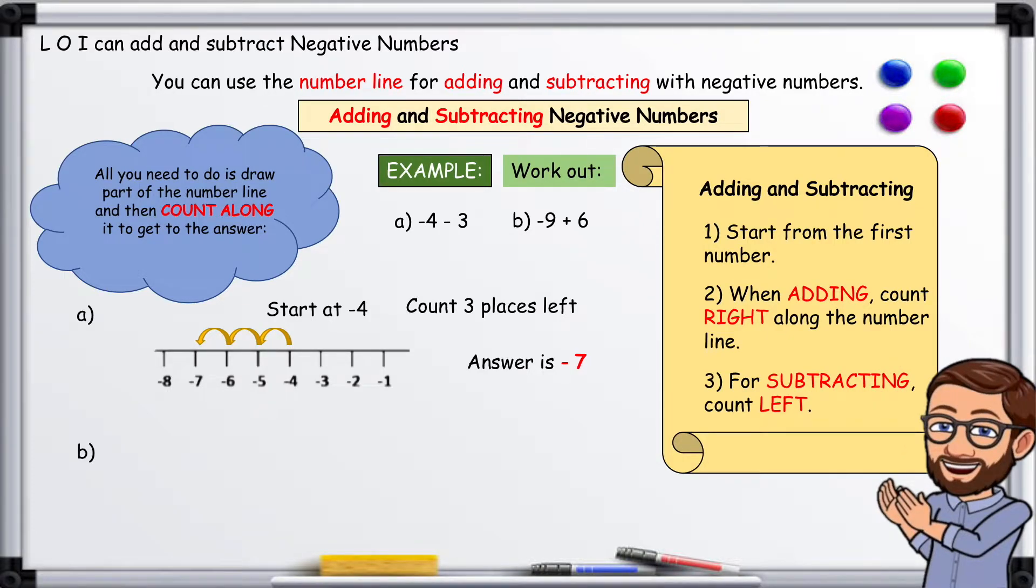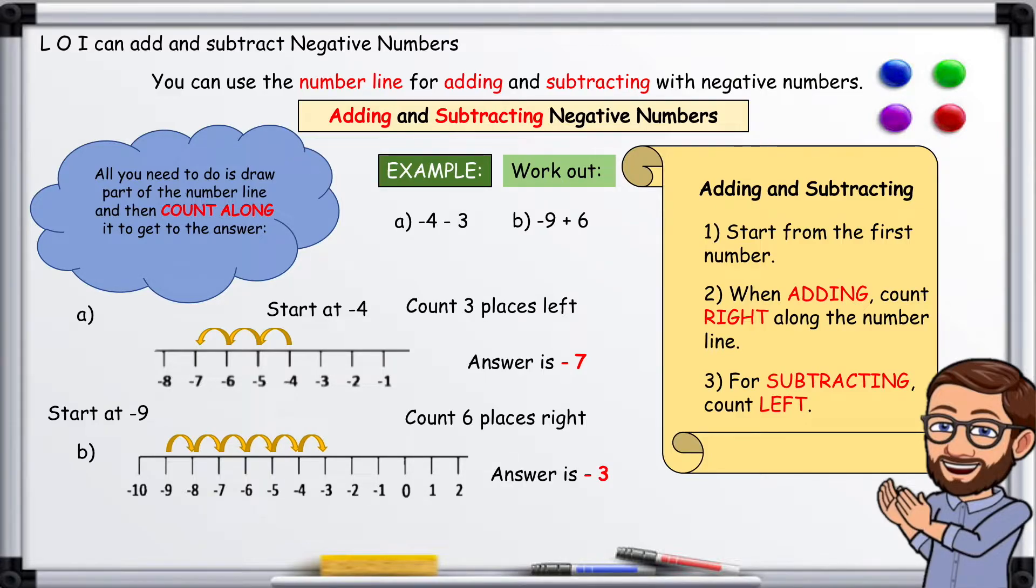B: Start at -9, count six places to the right: one, two, three, four, five, six. Our answer is -3.